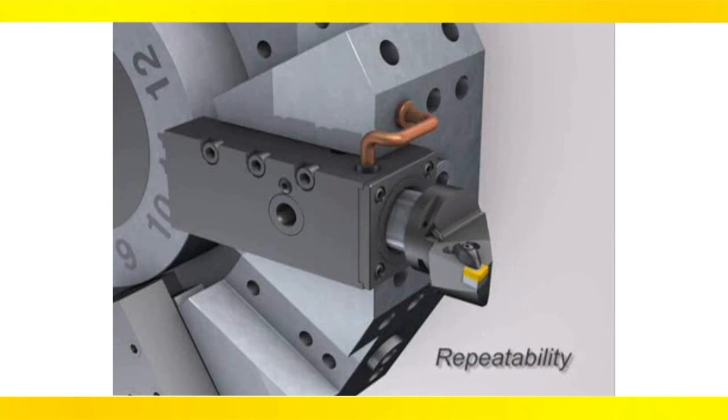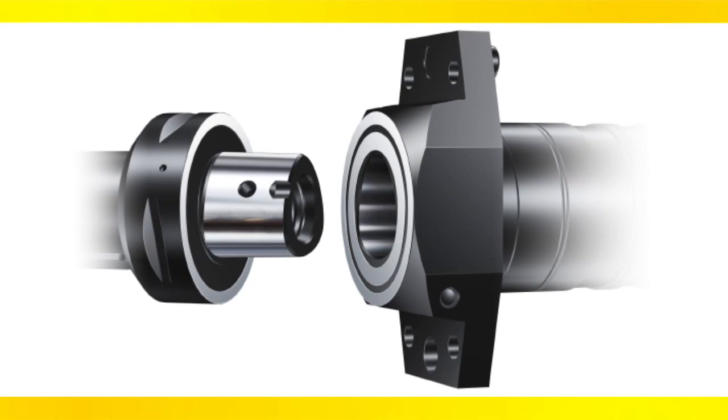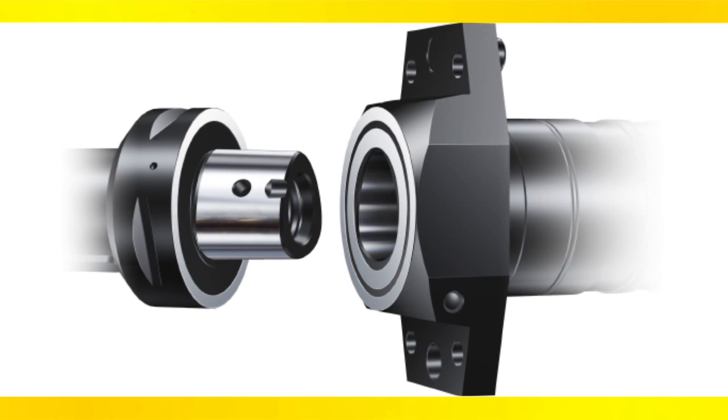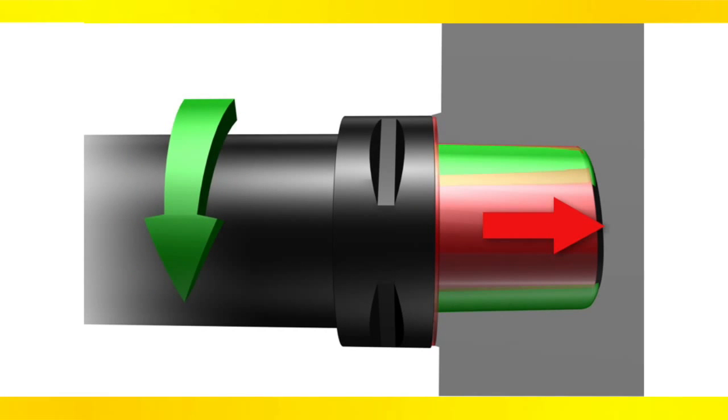There are three major advantages of the Coromant CAPTO design. Accurate quick changeability, especially in turning applications. Simultaneous face and taper contact for improved accuracy and strength in all application areas. And a far greater resistance to twisting and deflection of the tool assembly, especially in milling applications.